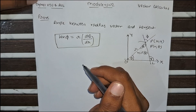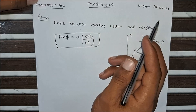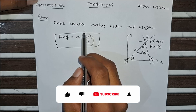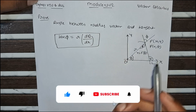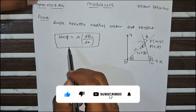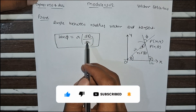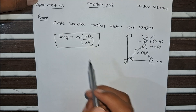Hello everyone. Today we are going to solve a very important proof from module two, vector calculus. The proof is the angle between the radius vector and tangent, and we need to prove that tan φ equals r times dθ/dr.